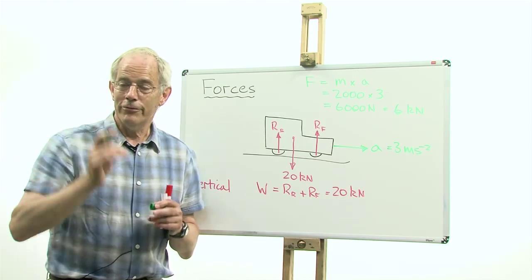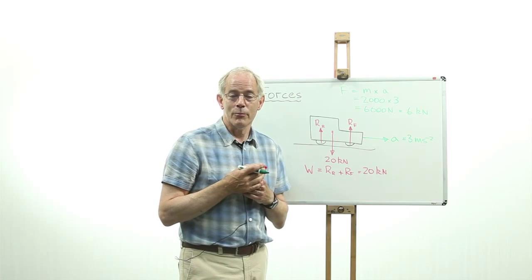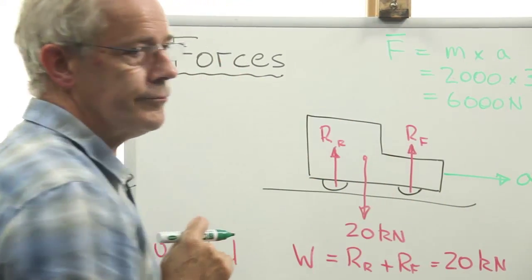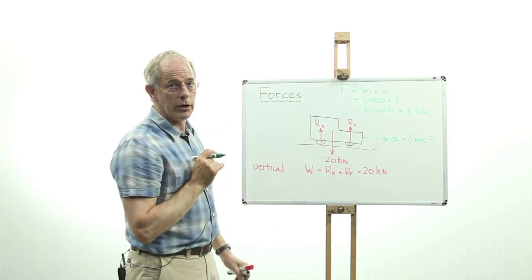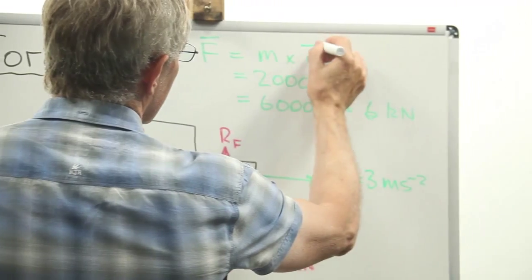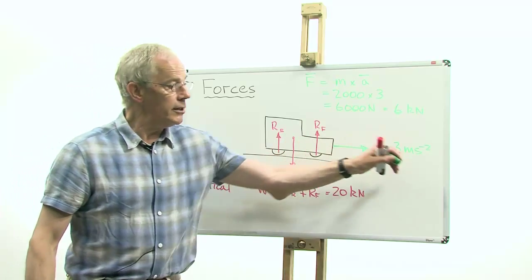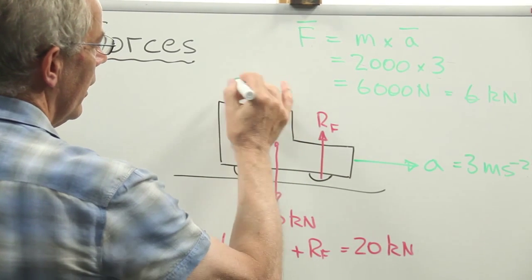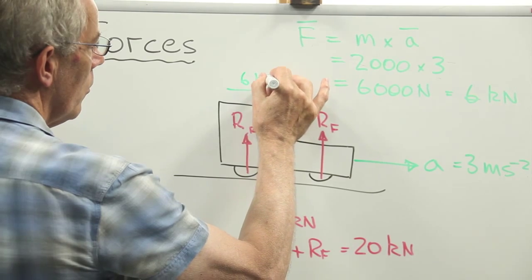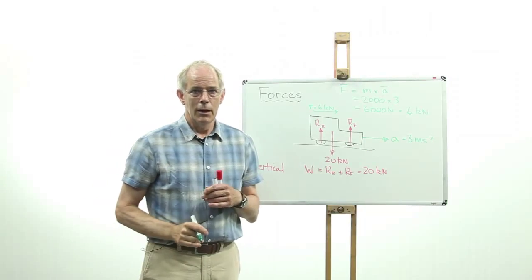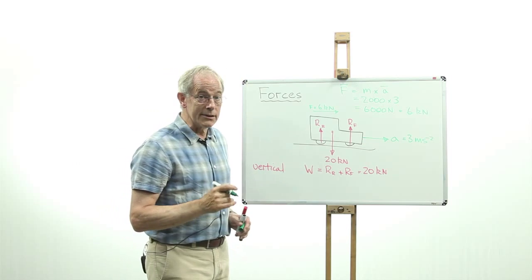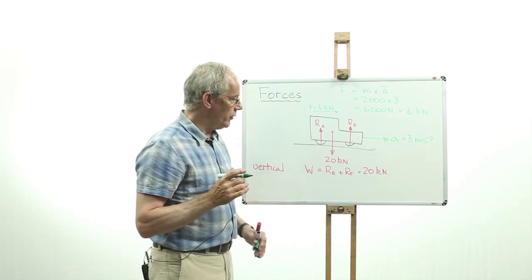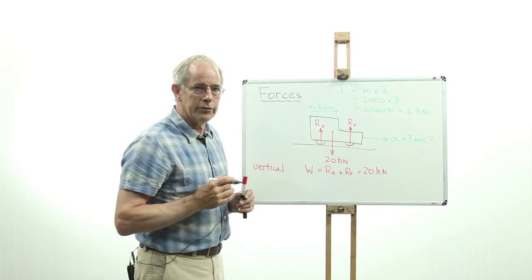But where does this force come from? And what direction is it in? Well, Newton also helps us here, because the force is a vector. And Newton's law tells us that the direction of the force is in the same direction as the acceleration. And the acceleration is left to right. So the force on this vehicle must also be left to right. And we know that it's 6 kilonewtons. But we haven't yet found out where this force arises. Well, the only point on the vehicle where a force could be generated is at the point where the tires contact the road.